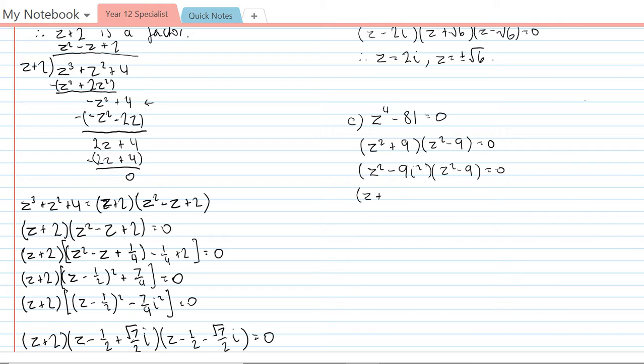z plus 3i, z minus 3i would be the first one. And the second one is going to be z plus 3 and z minus 3.